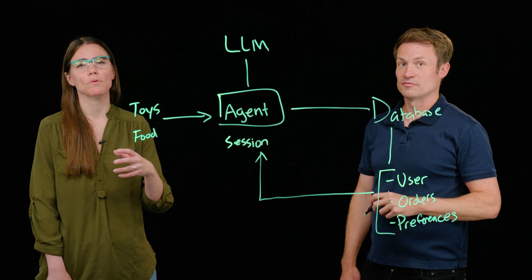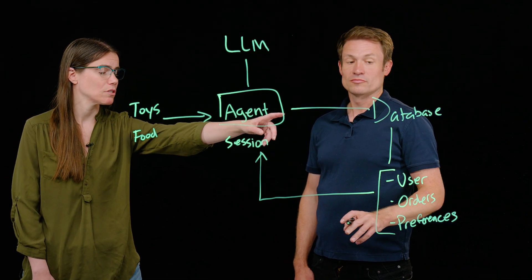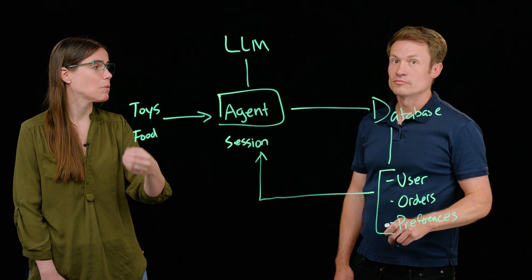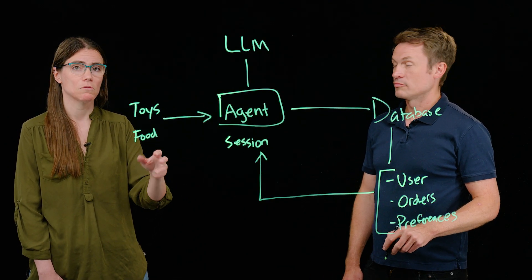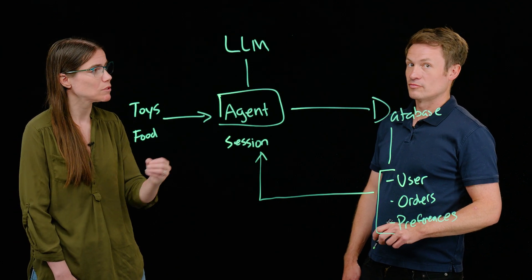So now that it knows I have a preference for like a specific brand of cat food, the agent, when it looks up the information in the database, can use that to return responses that are relevant to my specific preferences. That's super cool. But there's another big piece of information here that we haven't spent enough time on, Jason.